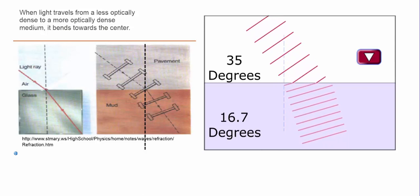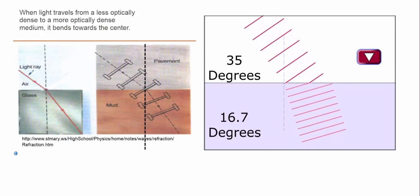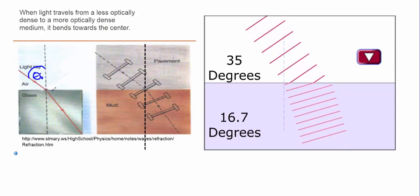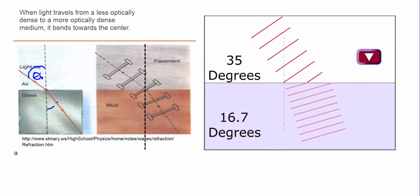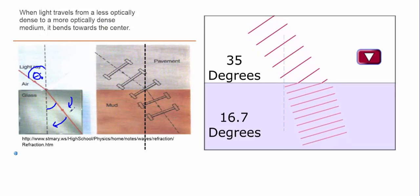You'll notice that light, when going from air to glass in this example, the incident angle, which remember is always drawn in reference to normal, that's still true. The incident angle will be bigger than the refracted angle.